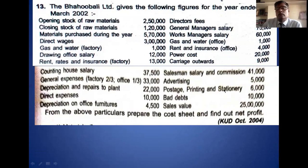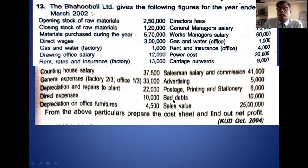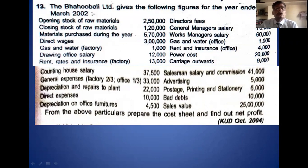Postage, printing and stationery — we use these items in the office, therefore it is an office overhead. Bad debts come at the time of sales, therefore it is a selling and distribution expense. Sales is the last item. Like this you have to bifurcate the items related with prime cost, factory overhead, office and administration overhead, selling and distribution overhead, and lastly sales.